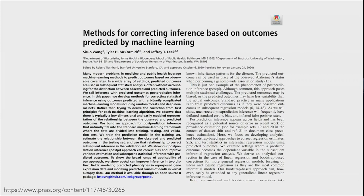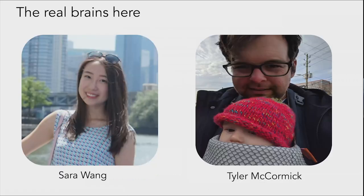They made us change the title — it was originally the beautiful short title of 'post-prediction inference,' and then the editors made us turn it into a much more complicated title, which was frustrating. But you can find it if you search for post-prediction inference. I'm going to be talking a lot about the work of two people: Sarah Wang and Tyler McCormick. Anything good is almost certainly due to them, and anything that's a mistake is almost certainly my fault.